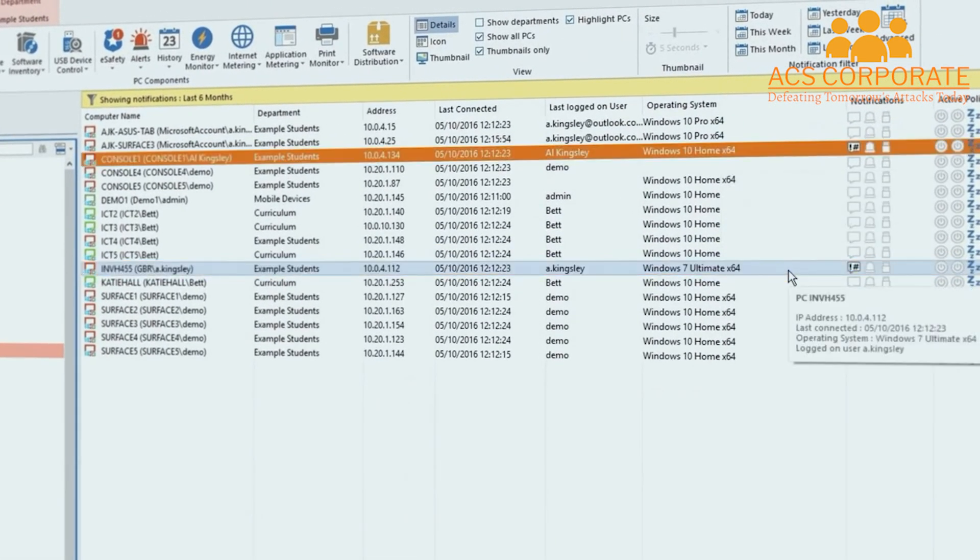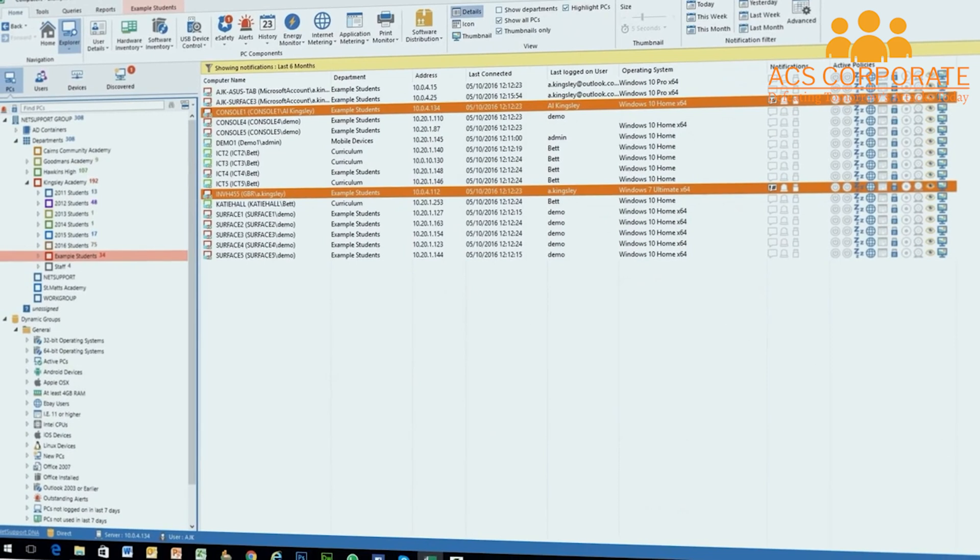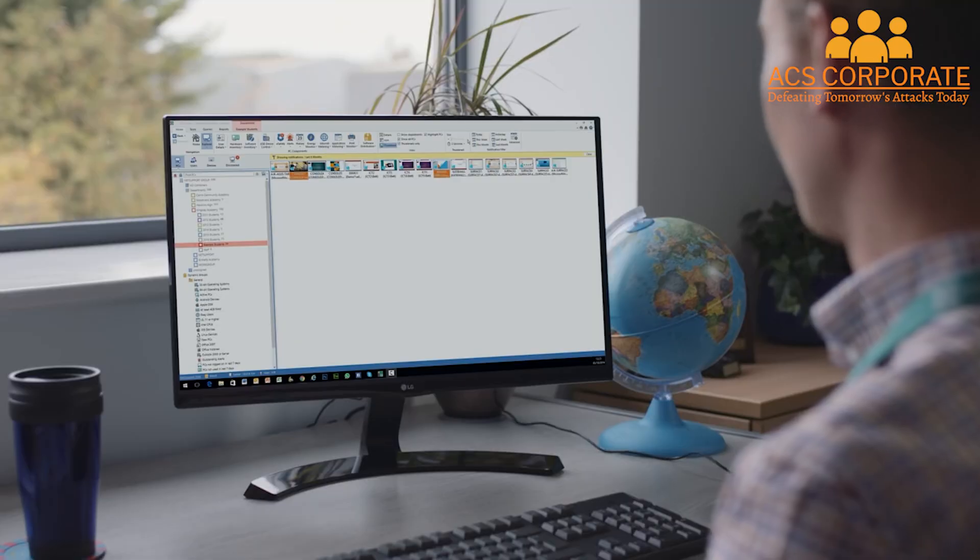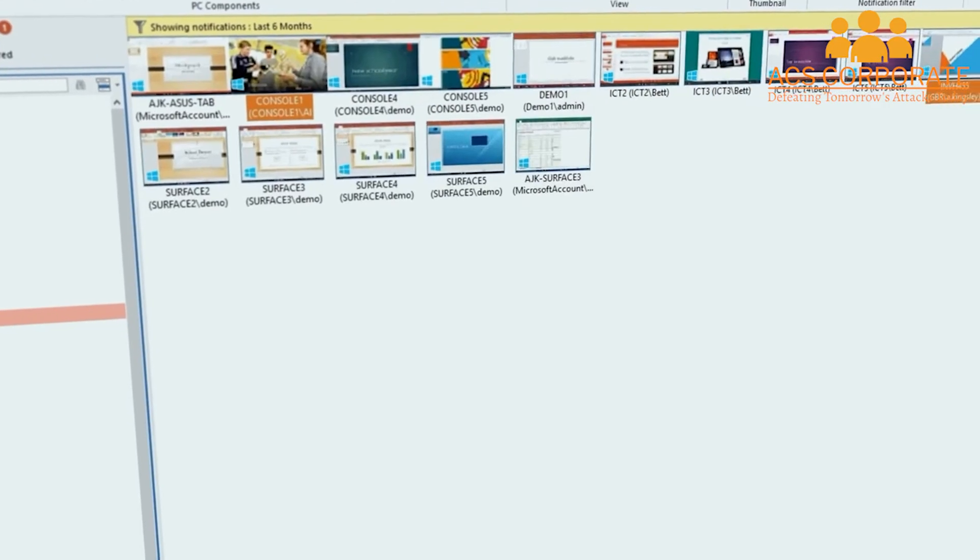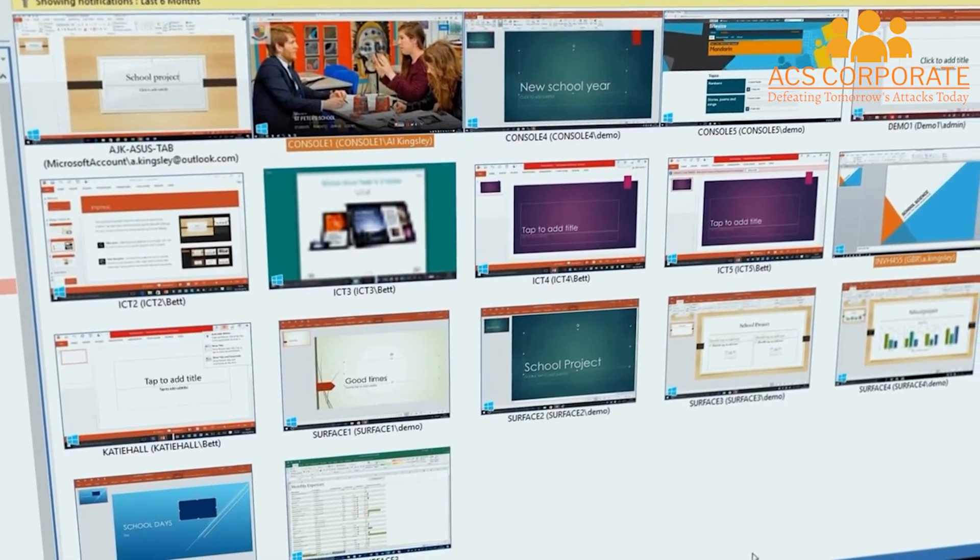NetSupport DNA provides a three-way view of all devices in the school, switching from a detailed view where the status of each PC, policies in force, and any triggered alerts are all highlighted, to an icon mode for easy identification of devices, to a real-time thumbnail view showing screen activity on PCs.